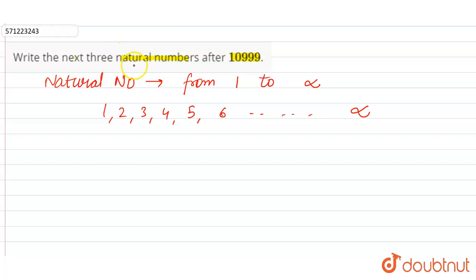So we have to write three natural numbers after 10999. Natural numbers are the counting numbers as well, so we just have to add 1 to these numbers to write the next three natural numbers.